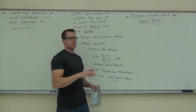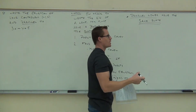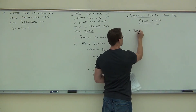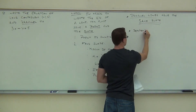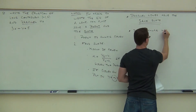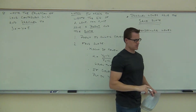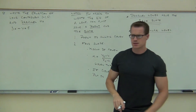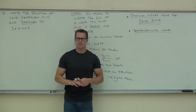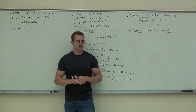Parallel lines always have exactly the same slope. They go up or down at the same exact rate, meaning they're never going to touch — meaning by definition they're parallel. Now there's one other situation we have to talk about: perpendicular lines. Perpendicular is a little bit different from parallel.